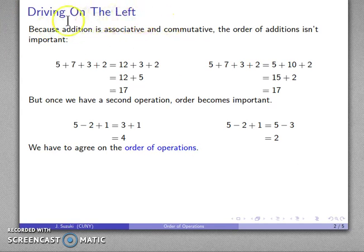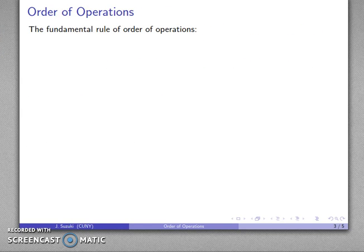Again, it's like deciding which side of the road we're going to drive on. It doesn't matter, as long as we agree. So, the fundamental rule about order of operations is the following: all operations are going to proceed from left to right. You can think about this as the rules of the road. Here's how we normally do things—we normally drive on the right, unless you're told otherwise.